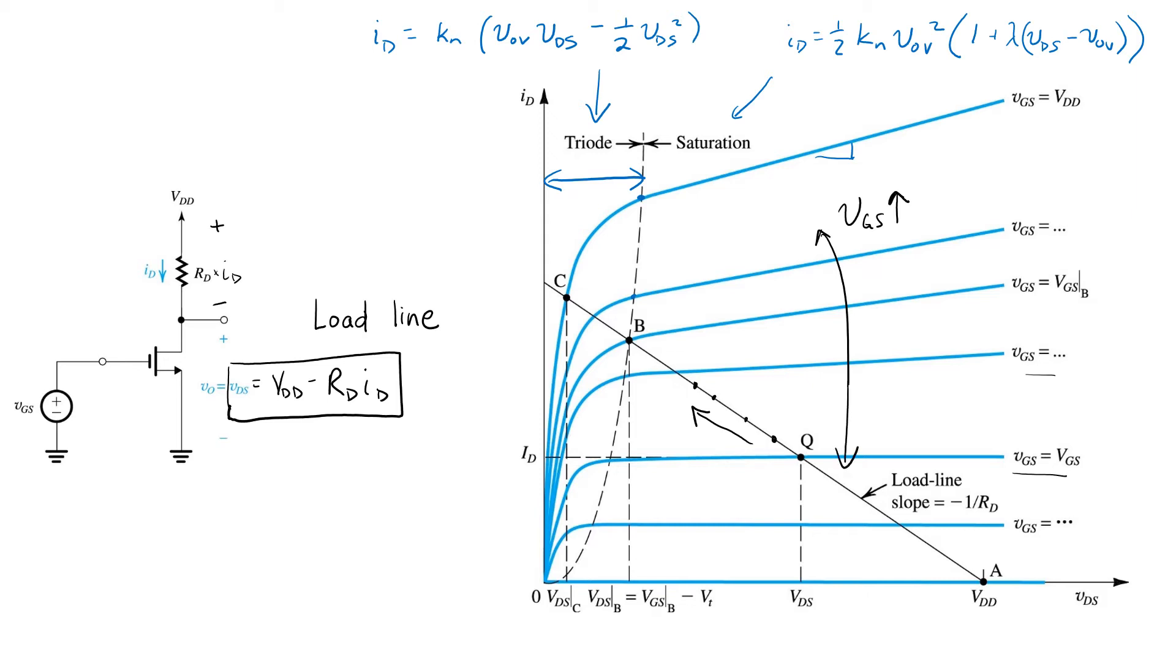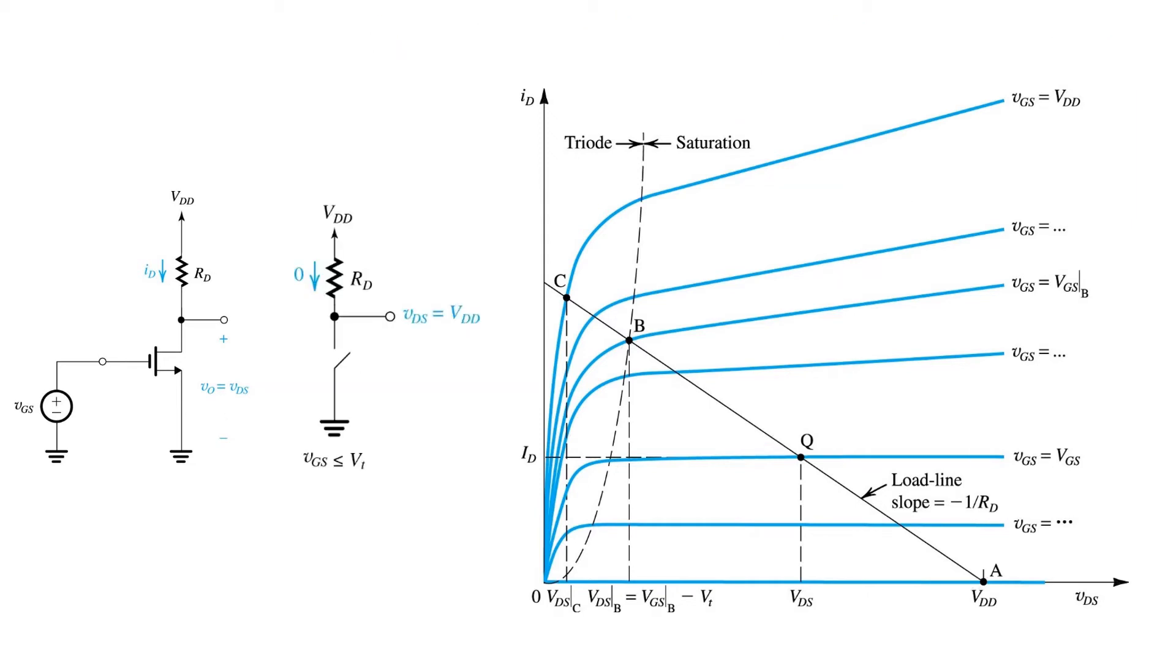remains in the saturation region between point A and B. So, at one extreme, we can imagine the applied gate source voltage is small. That is, imagine it's less than the threshold voltage of the NMOS transistor.